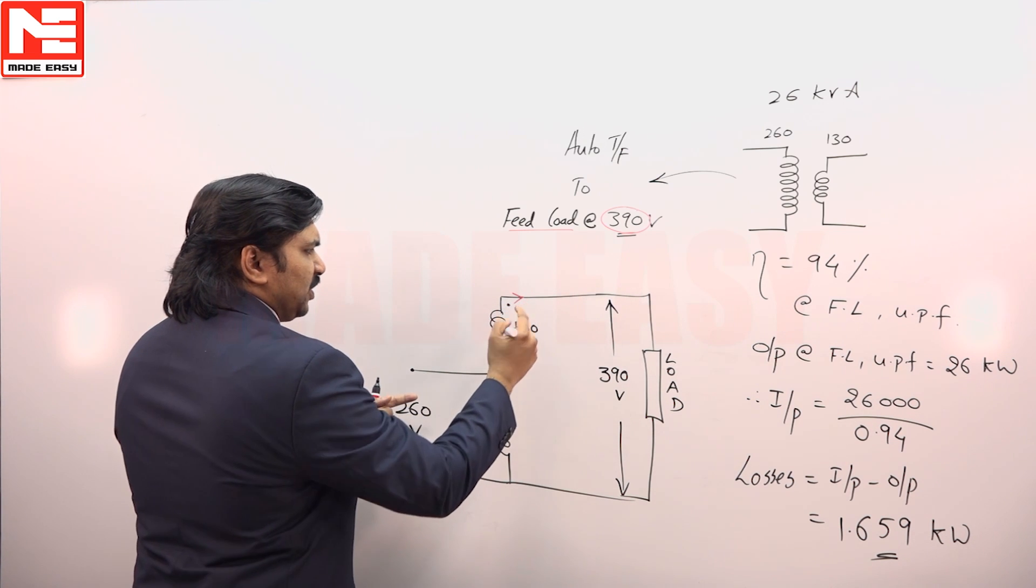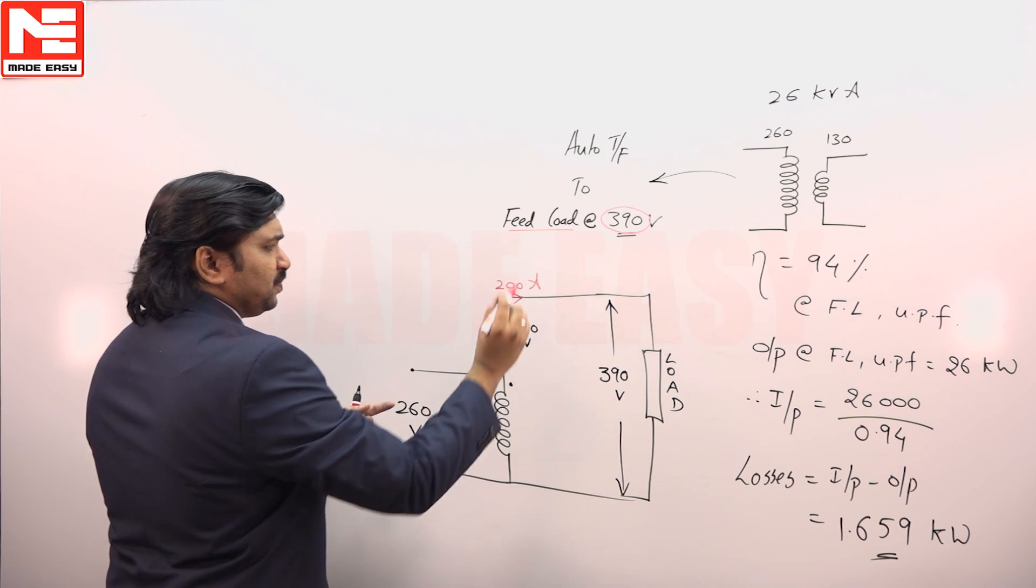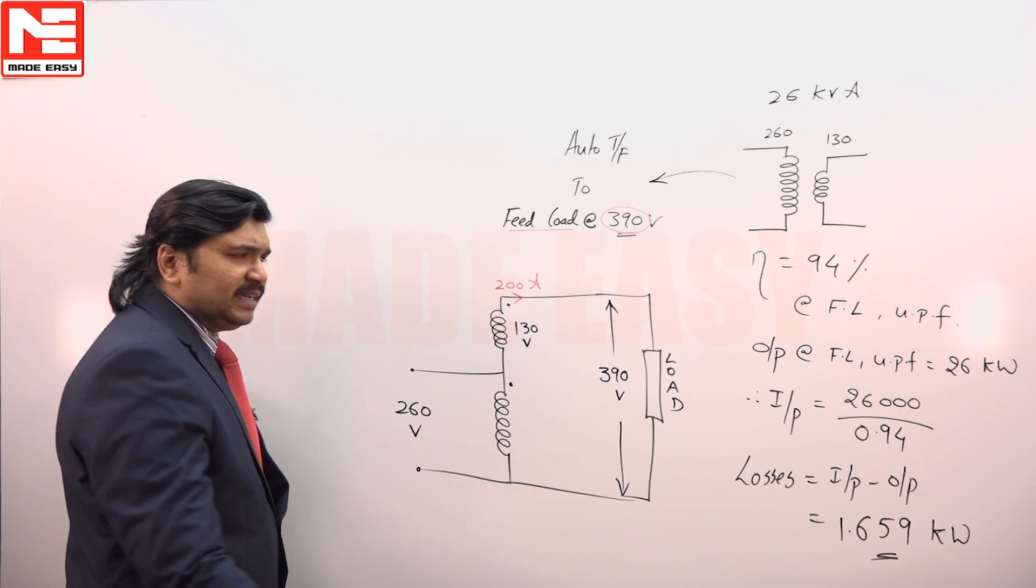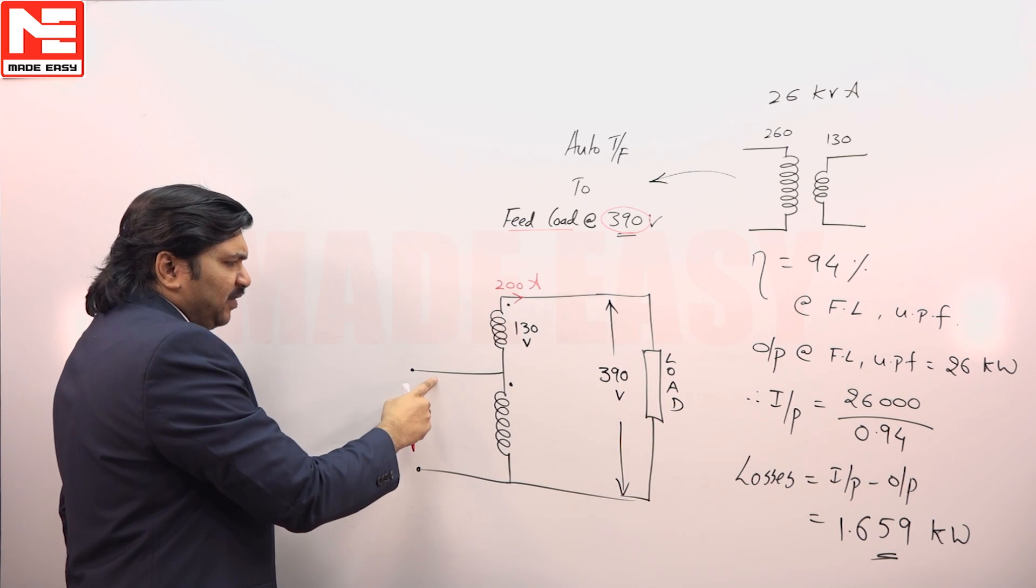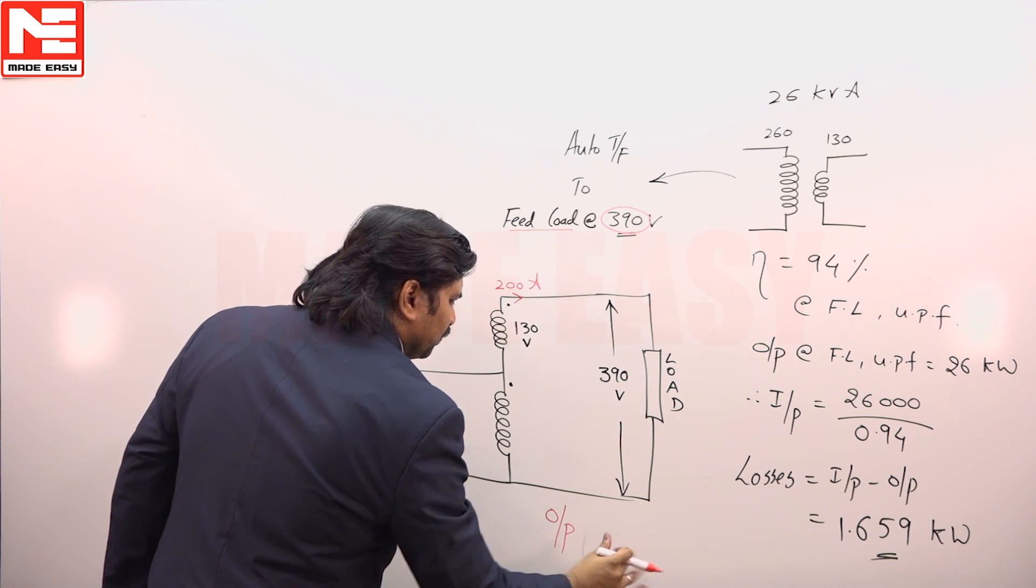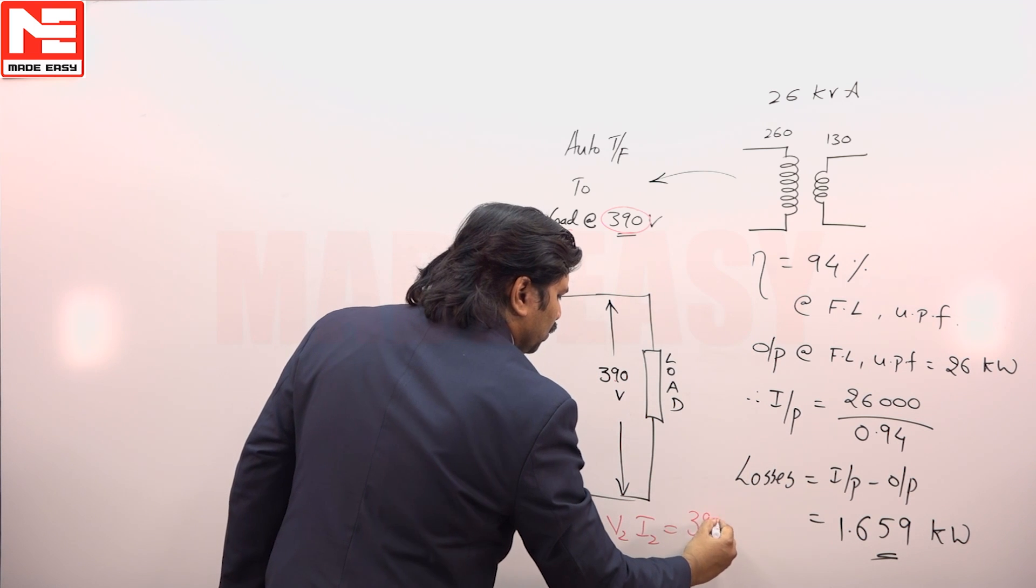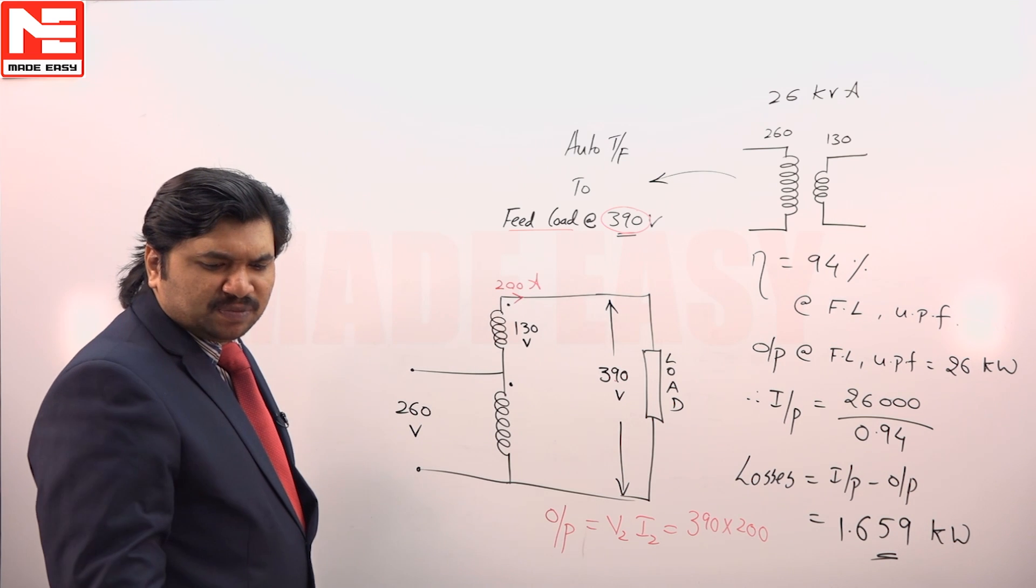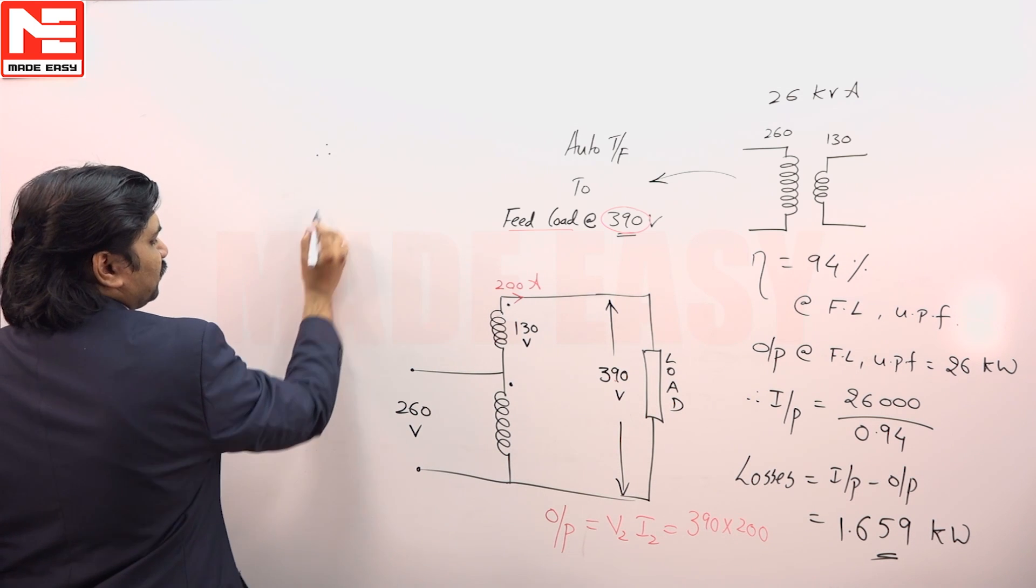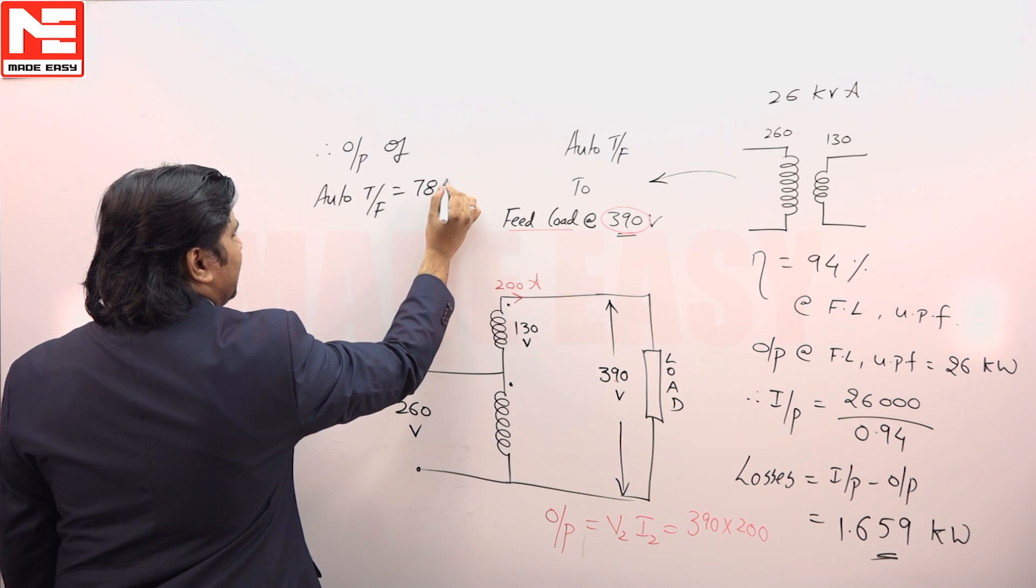The current rating of this 130 volt winding is 26000 by 130, which gives you 200 amperes. So what is the output rating of an auto transformer? Simply V2 I2 or V1 I1. What is V2 I2? That is equal to 390 into 200, which means 78 kVA. Output of auto transformer is 78 kVA.